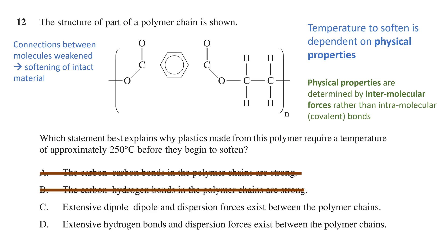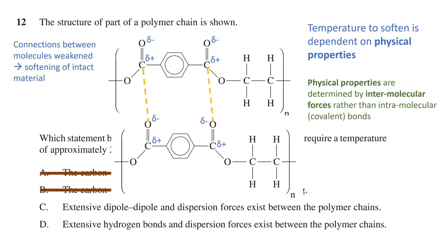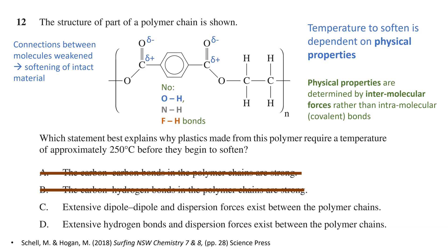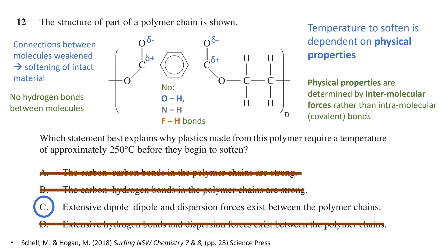Both C and D mention dispersion forces, so it comes down to whether dipole-dipole or hydrogen bonds are present. Dipole-dipole forces occur when a dipole is set up between atoms of highly different electronegativities not cancelled by the overall structure. These would be formed in the C double-bonded O groups on either side of the benzene ring — the more electronegative oxygen attracts electrons, causing a small negative charge on the oxygen and a small positive charge on the carbon. Therefore, dipole-dipole forces exist between two molecules. However, there are no covalent bonds between a hydrogen atom and either oxygen, nitrogen, or fluorine, so hydrogen bonds do not occur. This eliminates option D, leaving option C as the answer.